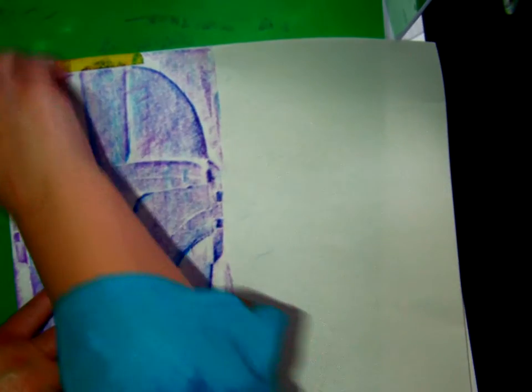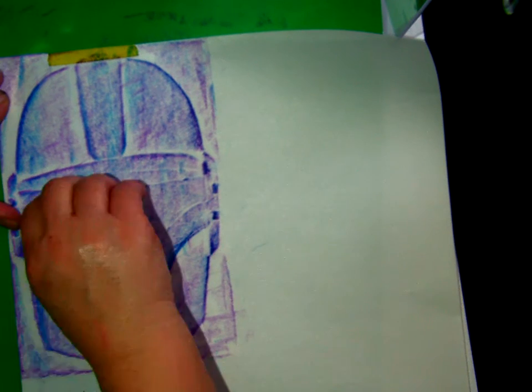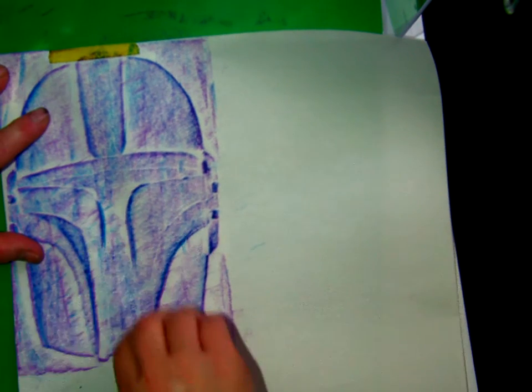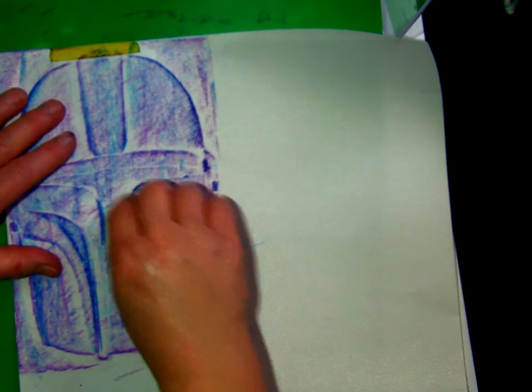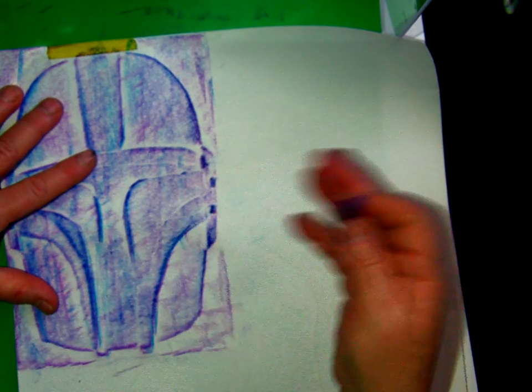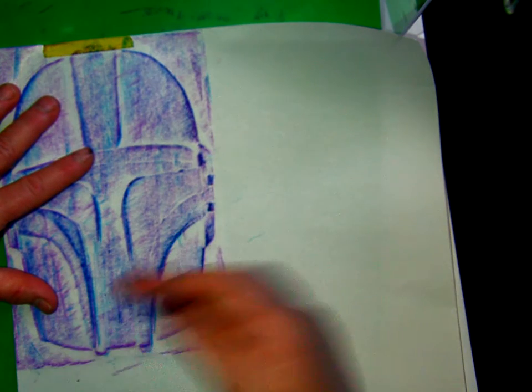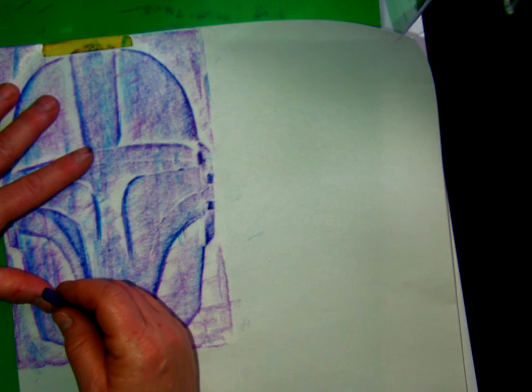And this is how we do two colors. Now when I do my other four prints, excuse me, my other three prints, I can do blue again or purple again, but I do not want you to do the combination of those two again. So maybe in my next one I'm going to do yellow and blue, or maybe I'm going to do purple and red.